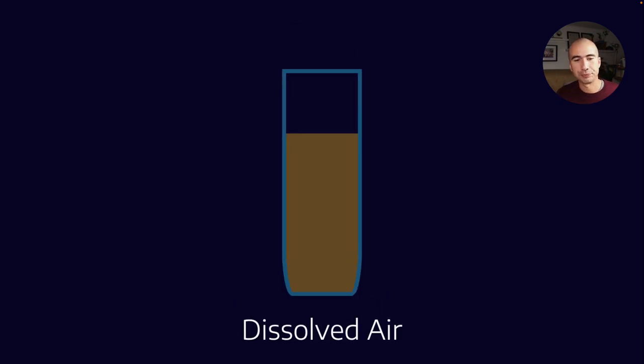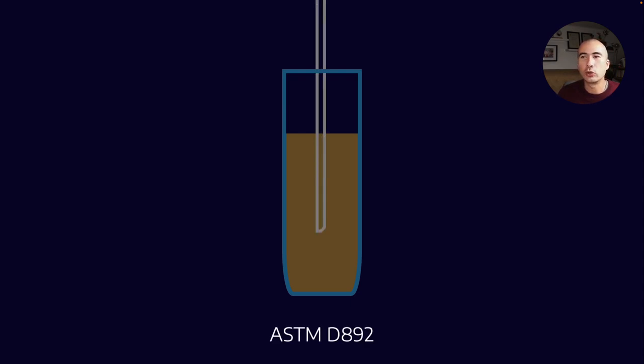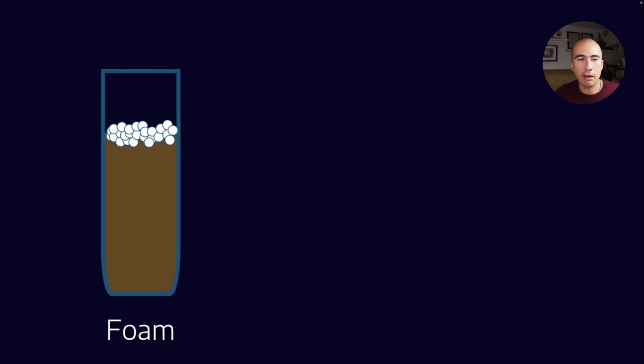Let's have a sample. Let's talk about how the ASTM test is done. I would have dissolved air in here. That's unavoidable. But what we're going to do under ASTM D892 is we are going to introduce some foam. So we basically blow air into the sample. Now I have foam.